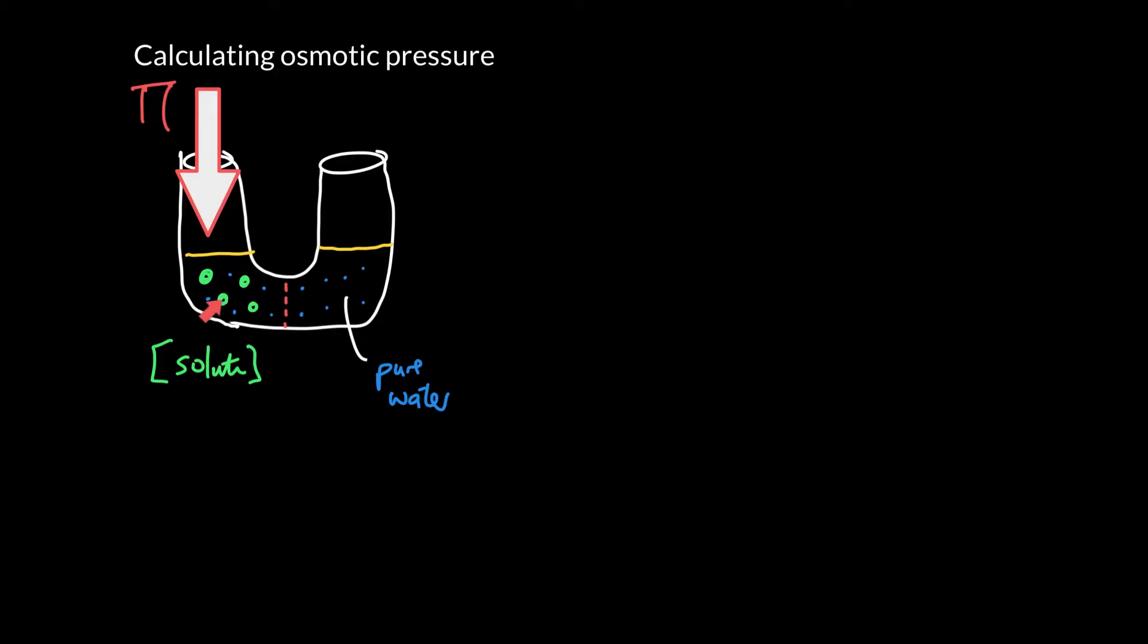And of course the solute, although it's got a higher concentration on the left and it would like to diffuse over to the right, is prevented by the fact that the semipermeable membrane has just got holes that are way too small for it to move through.